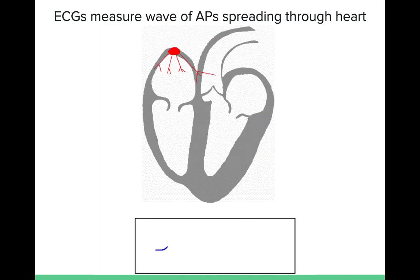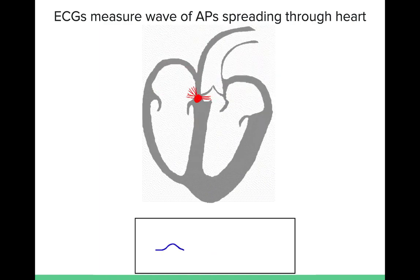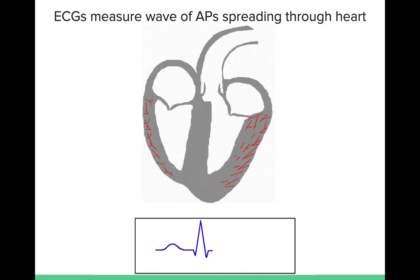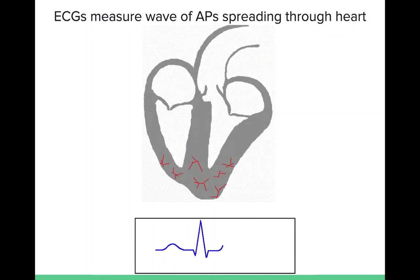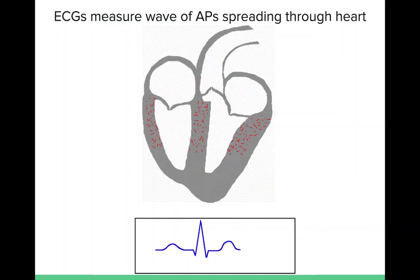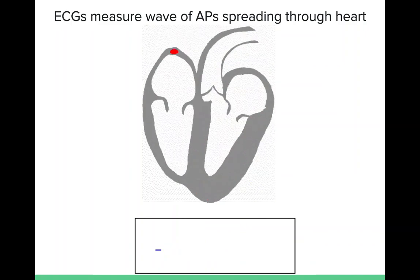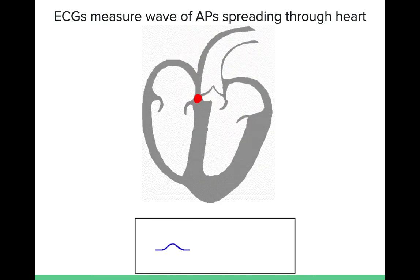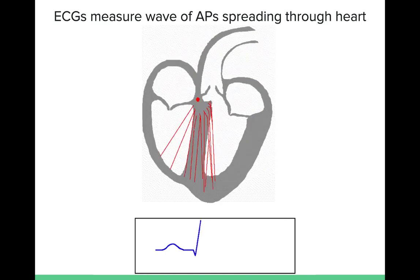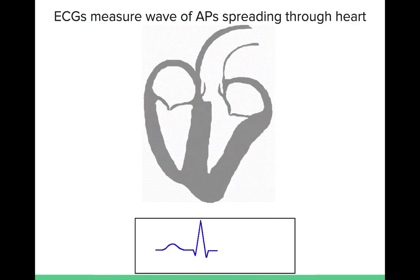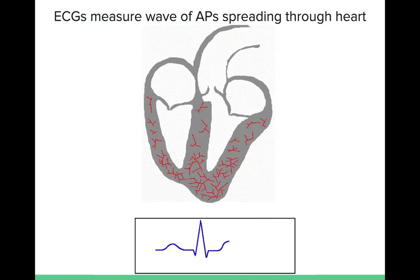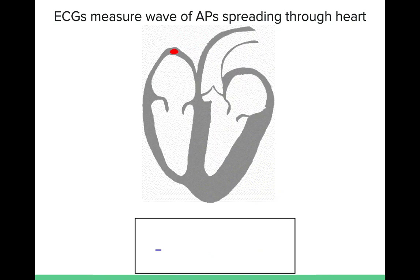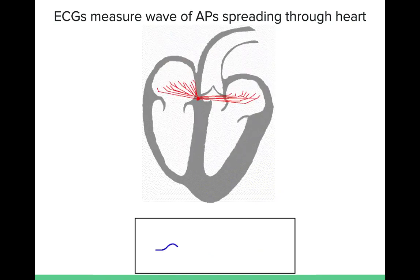Atria depolarize. AV node delay — flat line, because no electrical activity. Ventricles depolarize — huge spike. Ventricles repolarize — final wave. You'll notice the ventricle depolarization spike is way, way bigger than the atria depolarizing. That's because the ventricles have way more muscle cells — they're bigger and stronger — so when they get excited, many more cells get excited, producing a much larger electrical signal.